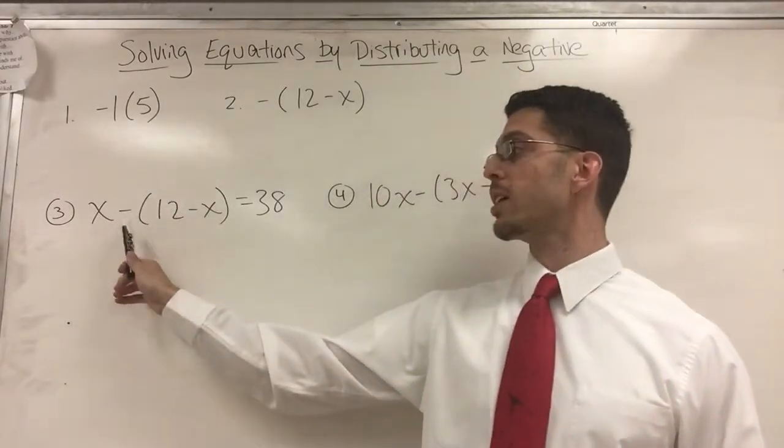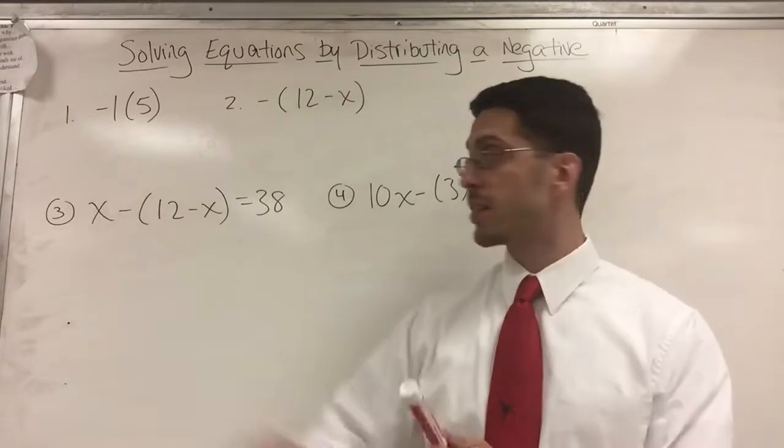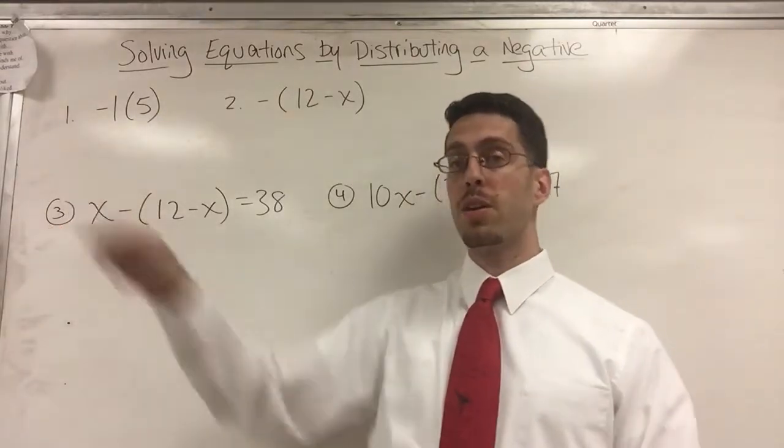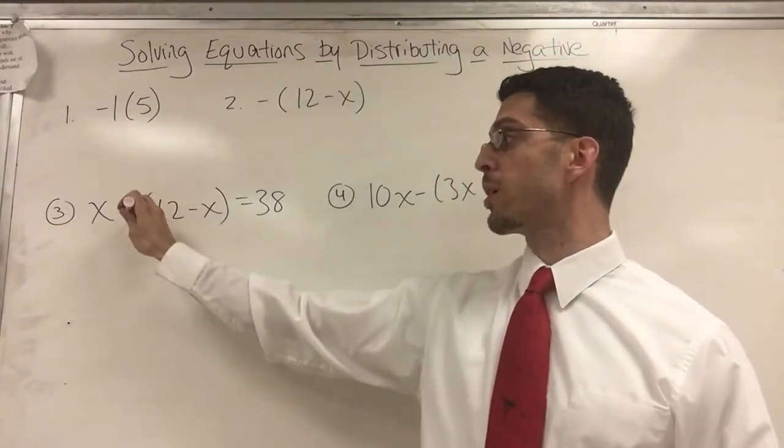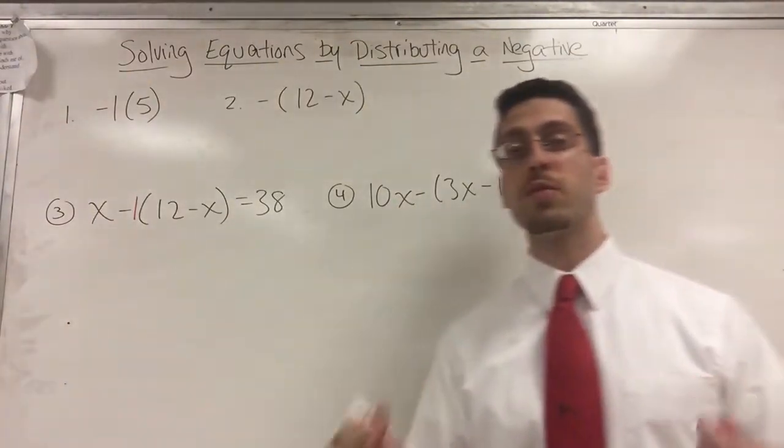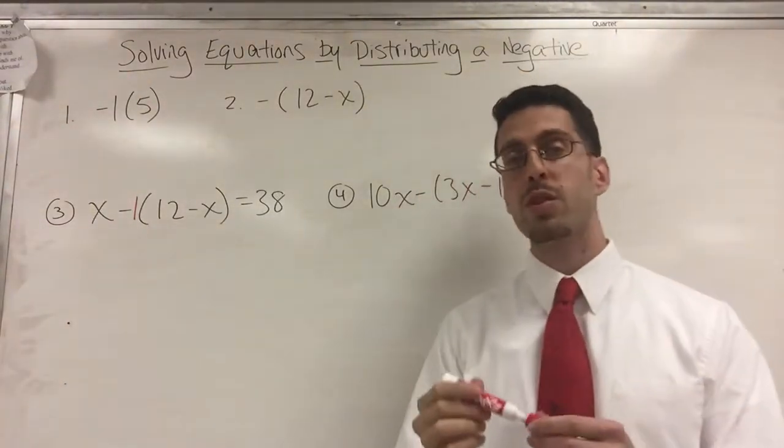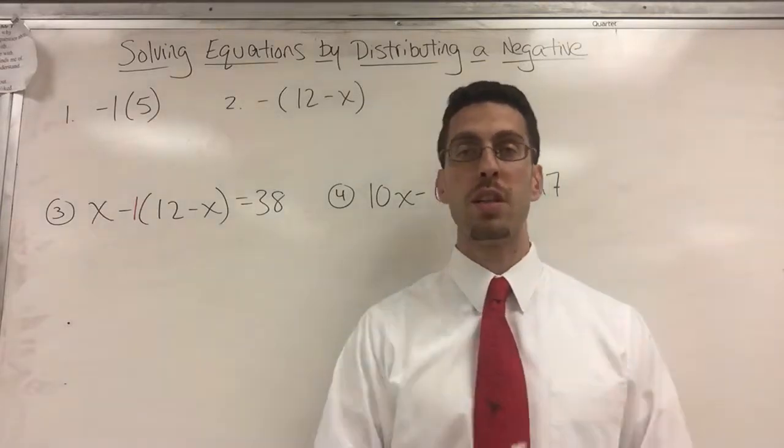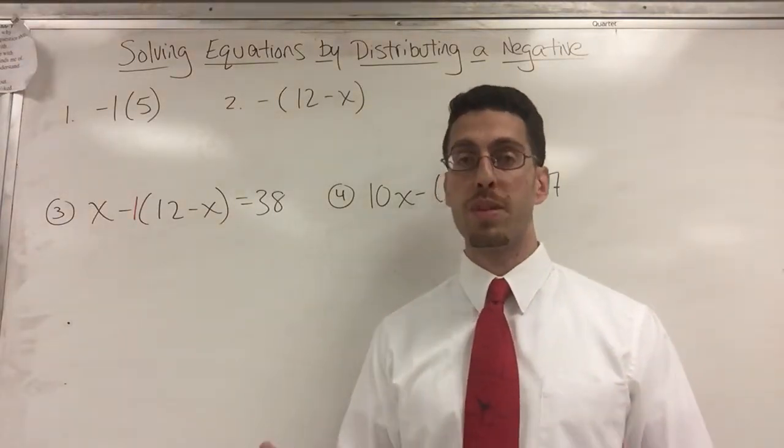So here's solving equations by distributing just the negative. What happens is you see something like this and people get overwhelmed because they see a minus sign here, but they kind of ignore it and they start to distribute what they see outside. But what's outside here is not an X. The X comes into the game later. What's outside is just a negative one.